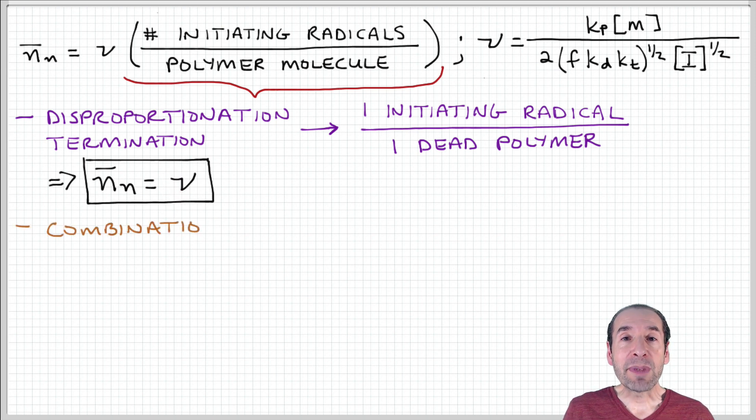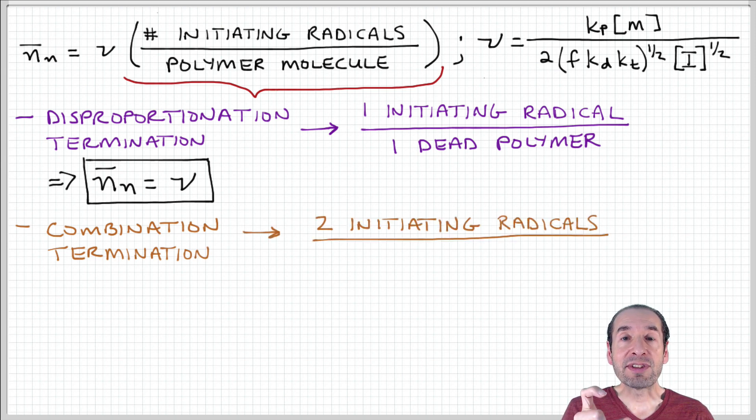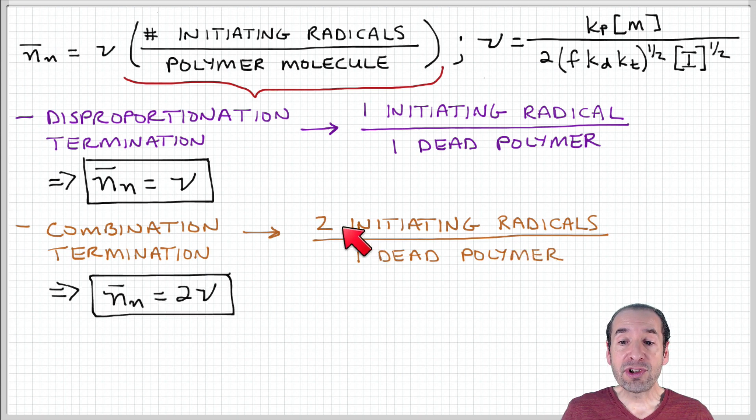Now, if we have combination termination, it's a little bit different because we have two active chains that combine to form one dead chain. In other words, two initiating radicals had to be involved in producing those two active chains, but they only resulted in one dead polymer.